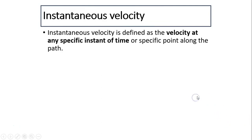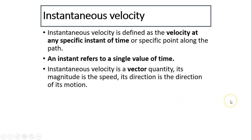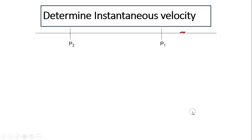Instantaneous velocity is defined as the velocity at any specific instant of time or specific point along the path. An instant refers to a single value of time. Instantaneous velocity is a vector quantity — its magnitude is speed, and its direction is the direction of motion.